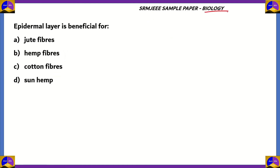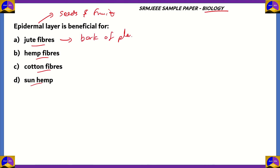The final question is biology. The epidermal layer is beneficial for which fiber: jute fibers, hemp fibers, cotton fibers, or sun hemp? The epidermal layer is usually found in seeds and fruit. Jute fibers are made from the bark of the jute plant, so option A is incorrect. Hemp and sun hemp are also incorrect because their fibers come from the bast of the plant.